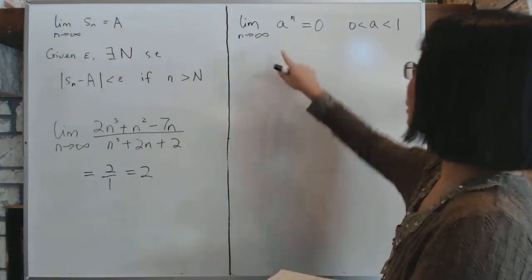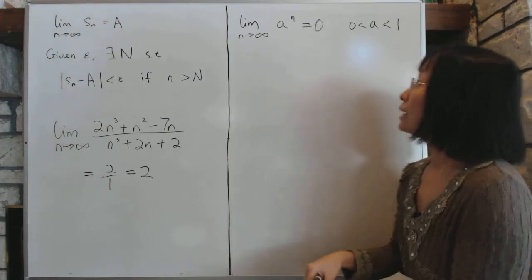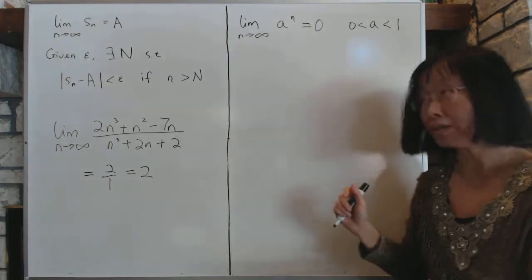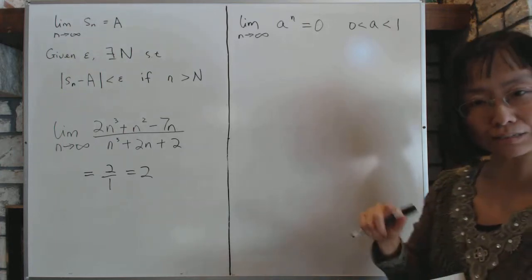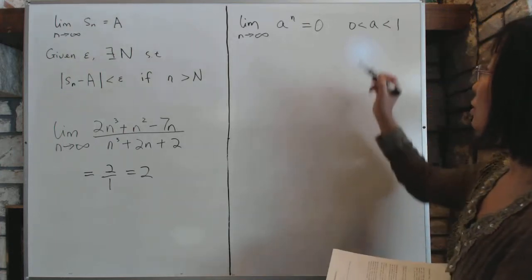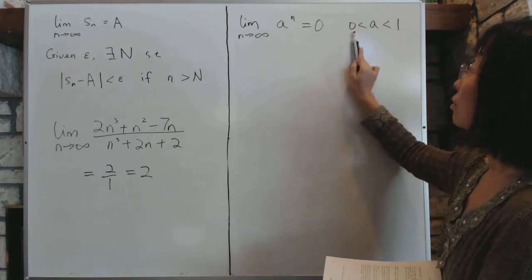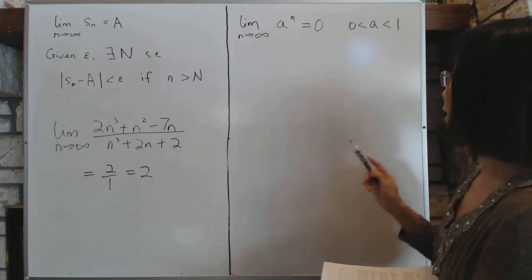Now, the next question we look at is more difficult. You have a to the power n as n goes to infinity and we must prove that it's 0 as long as a is between 0 and 1. You also notice that if a is just 1, then you'll stay at 1. If a is 0, it will stay at 0. It's not going anywhere.